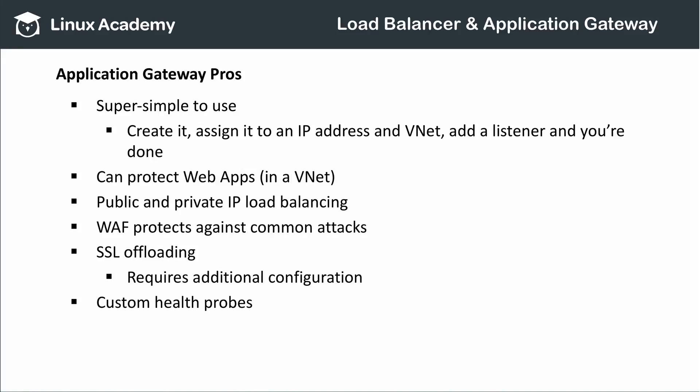There are several pros to using Application Gateway. They are considerably easier to configure than load balancers — just create your gateway, assign it to the inbound IP address in a virtual network, add a listener, and you're done. If using SSL offloading, you also need to configure the SSL certificate and add a rule for decoding and encoding. The WAF SKU can protect you against common web attacks, it works for both public and private IP addresses, and like Load Balancer, you can create custom health probes for an Application Gateway.